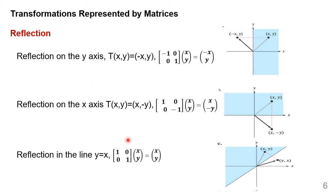Now we will look into transformations by matrices with illustrations. First, reflection on the y-axis. We have taken a transformation matrix A equal to [[-1, 0], [0, 1]]. When I multiply this with (x, y), I get the answer as (-x, y). So the vector (x, y) multiplied with the matrix A = [[-1, 0], [0, 1]] turns out to be (-x, y). It reflects the vector across the y-axis.